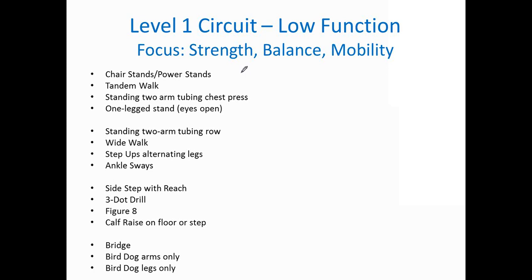Now if we look at level two function — a middle-function group — we start to mix it up and take away some stability, looking at different stance positions. Again, we're mixing higher-intensity movements with lower-intensity movements. That might be a strength and power exercise followed by more of a balance or stabilizing exercise, going back and forth with those. This approach makes the training very efficient.